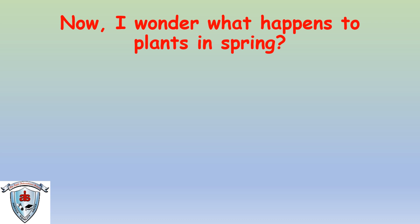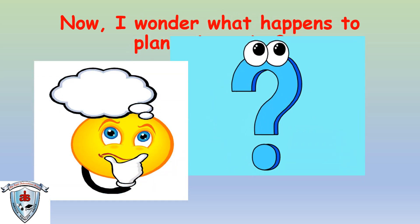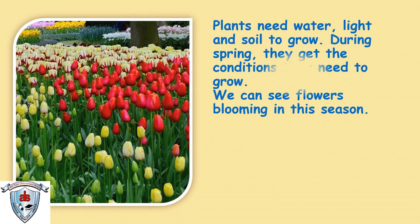Now I wonder what happens to plants in spring. Do you remember what happened to the plants in summer and winter? In summer the plants are more green because they get enough sunlight. And in winter the plants shed their leaves in order to survive in the cold weather. In spring, plants need water, light, and soil to grow. During spring they get the conditions they need to grow, and we can see flowers blooming in this season.